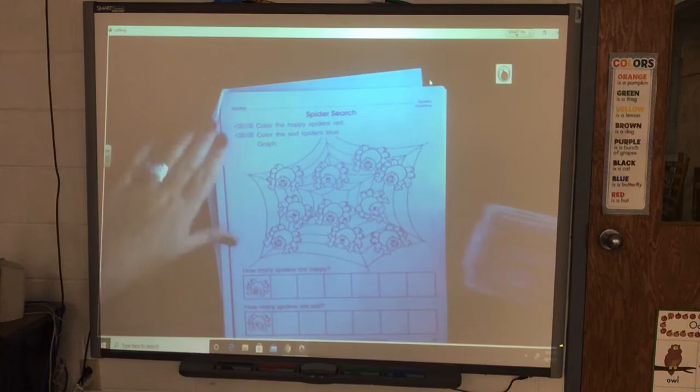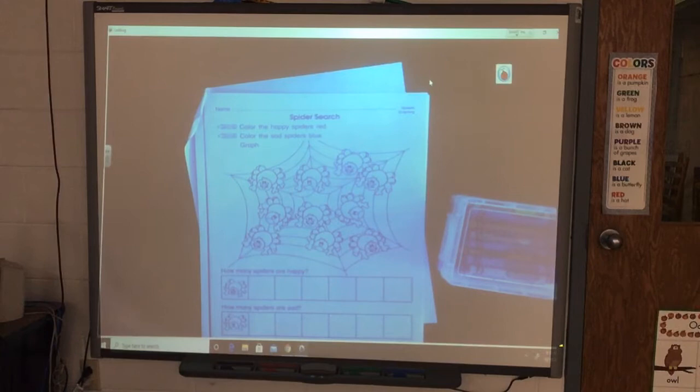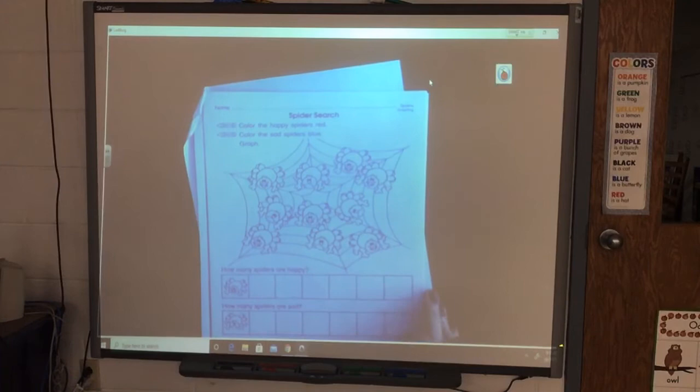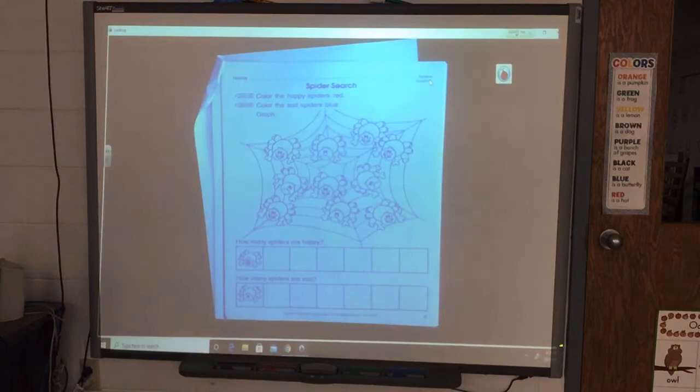I have got my crayons. We are going to need a red crayon and a blue crayon. So I am going to get out my red crayon and I am going to get out my blue crayon. The directions say color the happy spiders red, color the sad spiders blue. So you may color all of these spiders. I am just going to do the graphing part with you and then you can finish later. So color the happy spiders red. So I have got my red crayon.